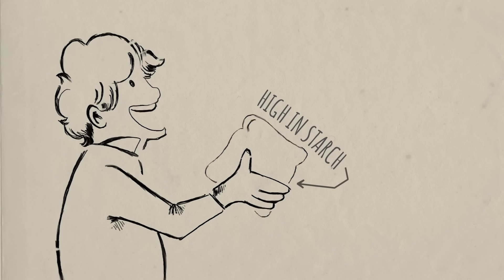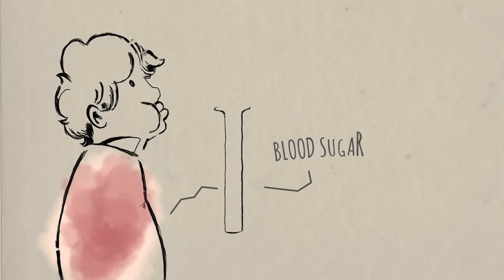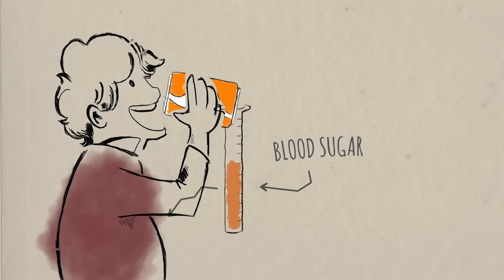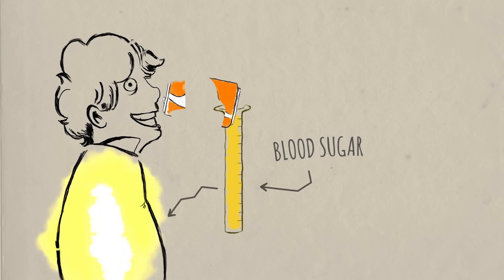So foods high in starch, like crackers and white bread, are digested easily, quickly releasing a whole bunch of glucose into your blood, exactly what would happen if you drank something high in glucose, like soda.